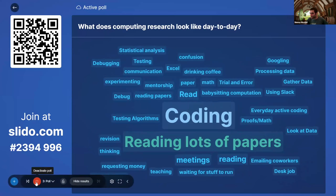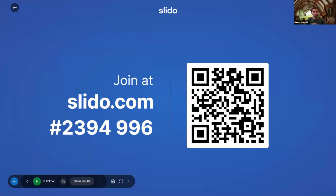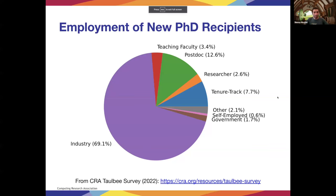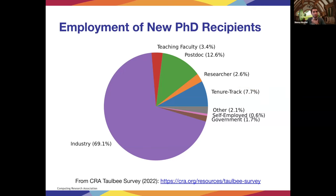We wanted to get your preconceived notions without influencing you too much. The Computing Research Association actually surveyed new PhD recipients about where they find themselves working. The most frequent audience response was universities, which is an important trajectory — but actually almost 70% of new PhD recipients in a computing field went into industry.